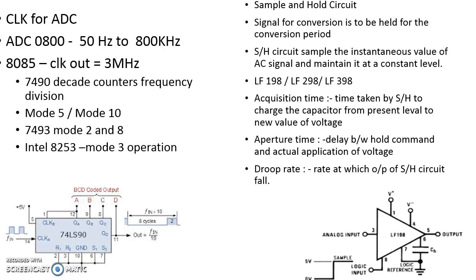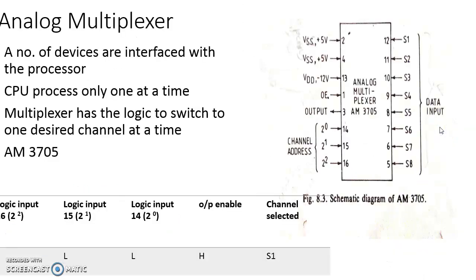The acquisition time and aperture time are key parameters of the sample and hold circuit. This concludes the discussion of the sample and hold circuit. We will now see another important component of the processor-based data acquisition system supporting the analog to digital converter — the analog multiplexer.